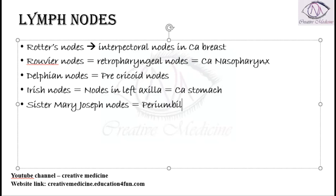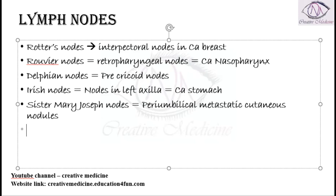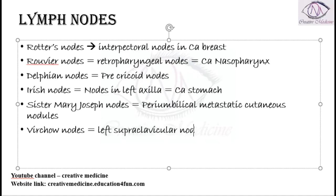Sister Mary Joseph nodes are present around the umbilicus — they are periumbilical metastatic cutaneous nodules. Then we have Virchow's nodes. Virchow's nodes are actually left supraclavicular nodes. Then we have Cloquet's nodes. Cloquet's nodes are femoral canal nodes.